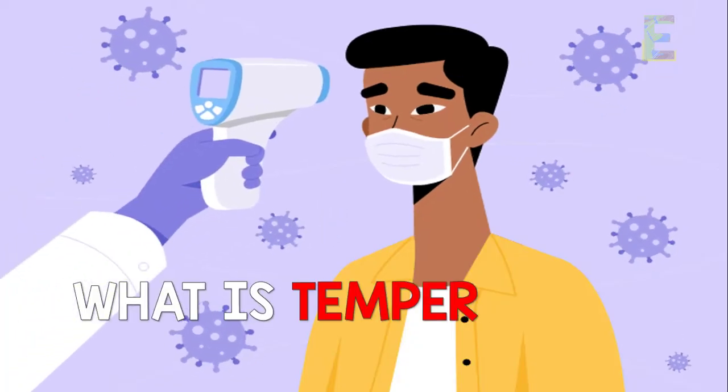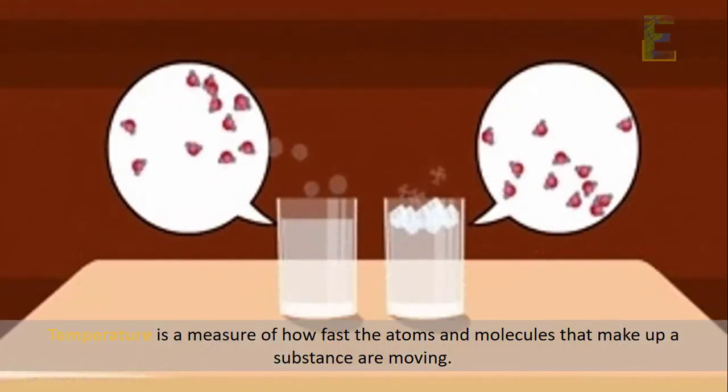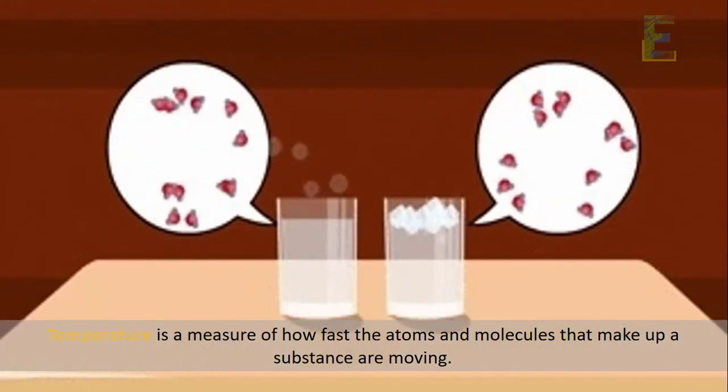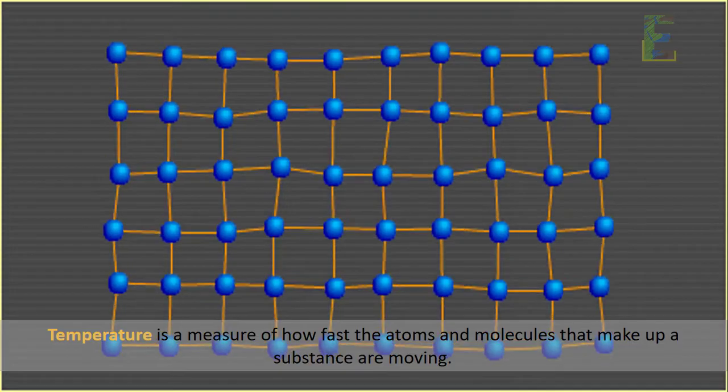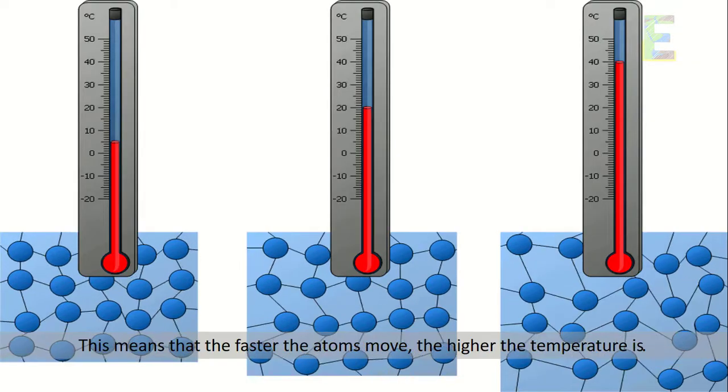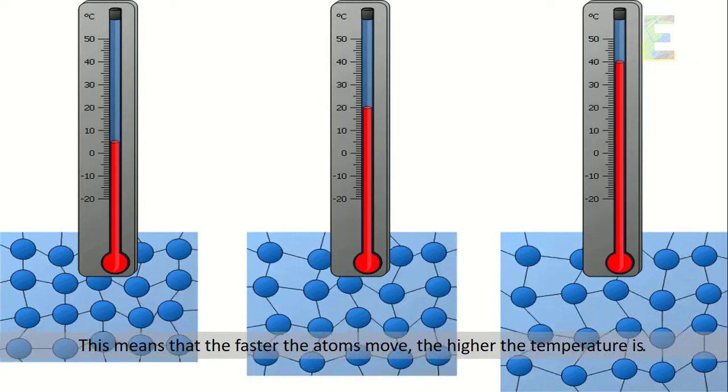So, what is temperature? Temperature is a measure of how fast the atoms and molecules that make up a substance are moving. This means that the faster the atoms move, the higher the temperature is.